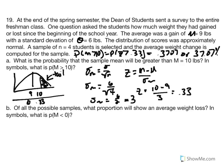Part B uses the same parameters but asks: what proportion of all possible samples will show an average weight loss? Zero pounds indicates no weight change, anything less than zero indicates weight loss. So the probability statement is: probability of obtaining a sample average less than 0. Standard error hasn't changed since sample size is the same: 6 over square root of 4 equals 3.